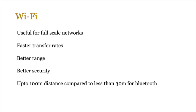Wi-Fi also uses the same spread spectrum technology and is normally useful for full-scale networks because it offers faster transfer rates, better range, and better security — up to 100 meters distance compared to less than 30 meters for Bluetooth. Bluetooth typically operates in the 10 meter range, though modern devices can reach up to 30 meters. Similarly, Wi-Fi is also increasing its range as technology improves.